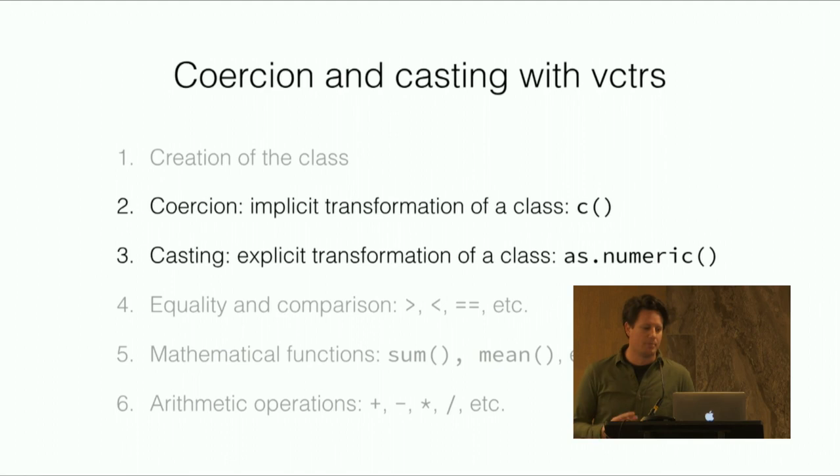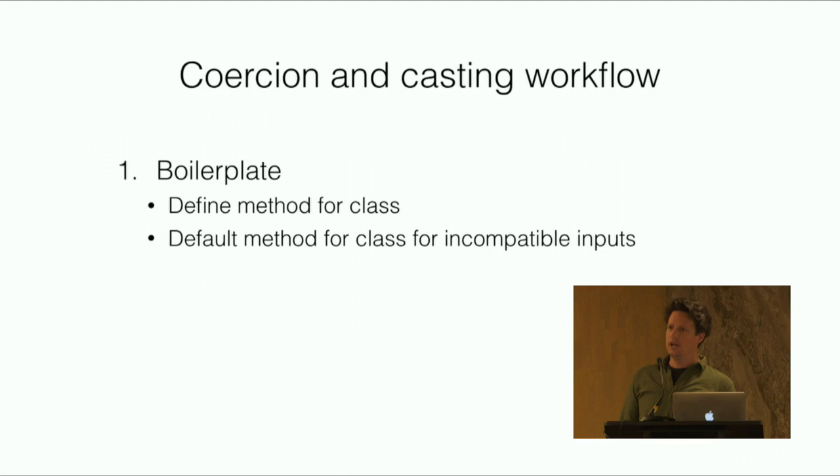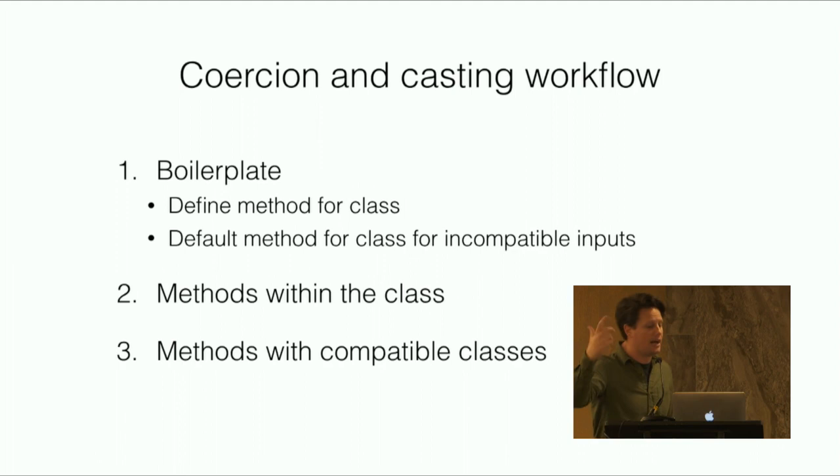The last thing I want to talk about that I have time to talk about is the issue of casting and coercion, which is really at the heart of what is happening as you're creating your vectors, your classes, and want them to interact with other different classes. The workflow is fairly simple. You have a boilerplate that you're going to use each time - this is the same for casting and coercion - where you define the method for the class and then you give a default. Then you do the methods within the class and then the methods with any compatible classes that you decide to choose.